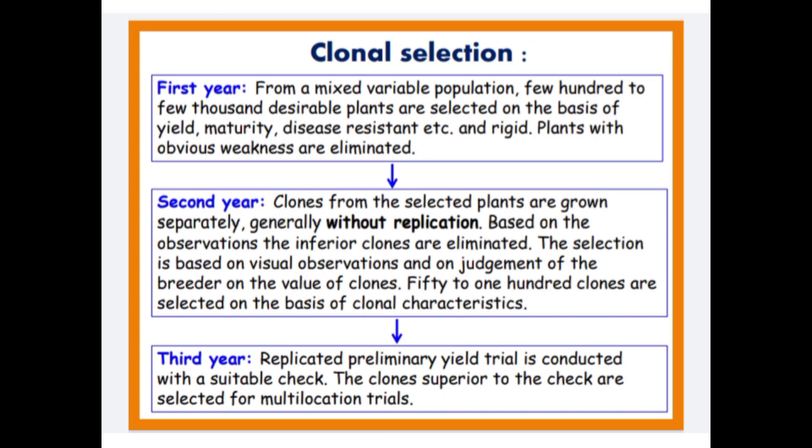In year 2, clones from the selected plants are grown separately, generally without replication. Based on observation, inferior clones are eliminated. The selection is based on visual observation and on the judgment of the breeder regarding the value of clones.